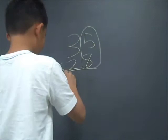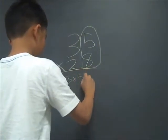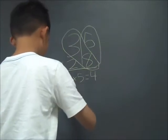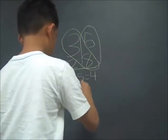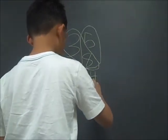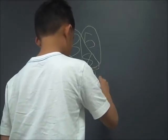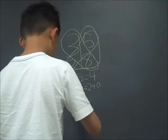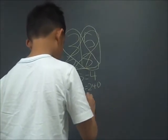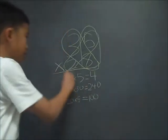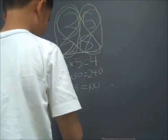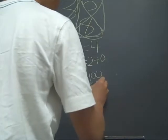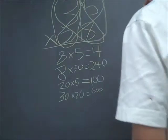First, you get 8 times 5. And see how I circled it? So you get 8 times 30. Then you move on to 20, and you get 20 times 5. Then you get 20 times 5. And when you're done, you get all of them and you multiply them.